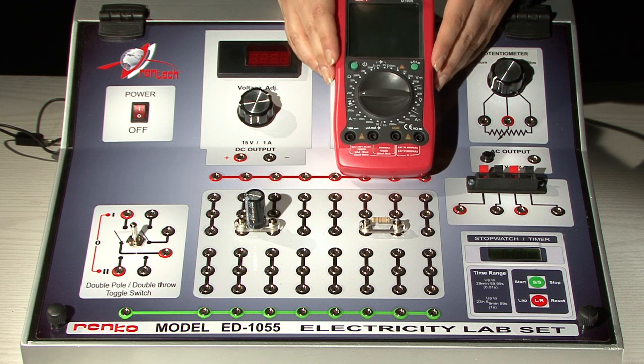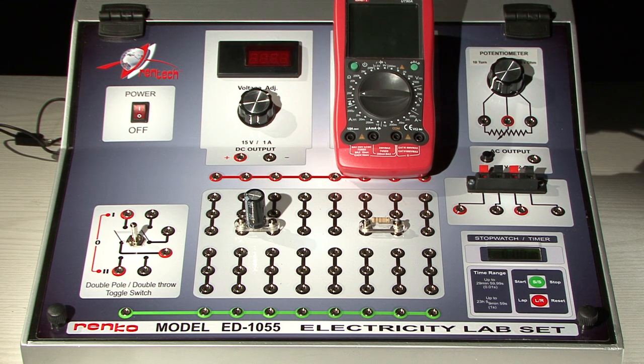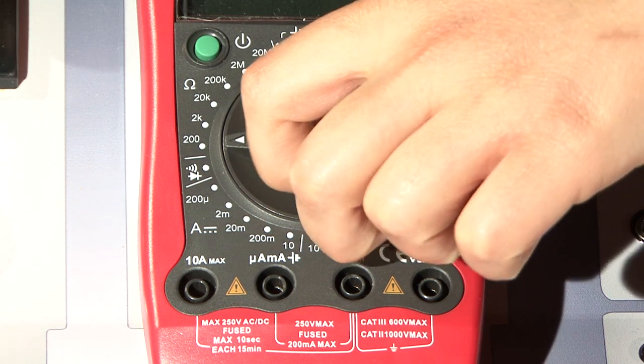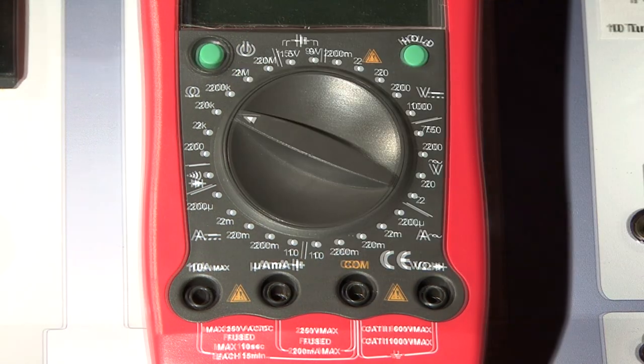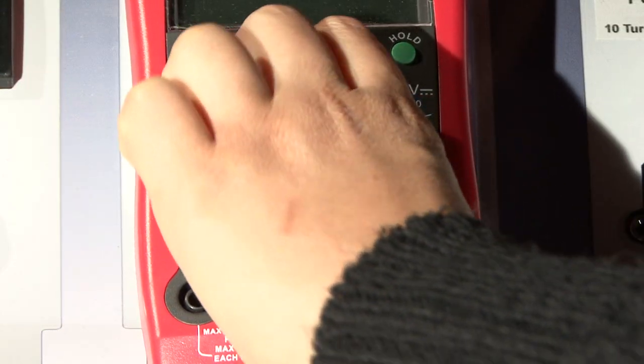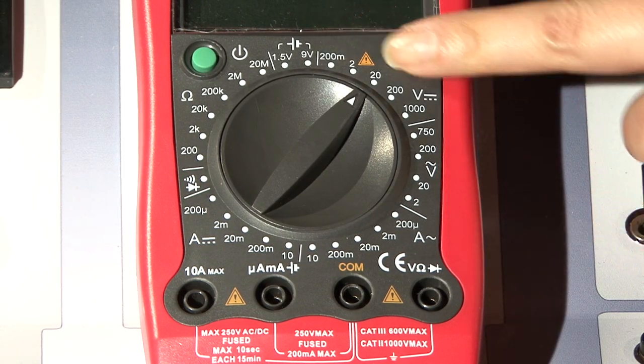This is a multimeter. We can measure resistance, current, and potential difference with this instrument. We need to use this part for measuring resistance, and this part for measuring potential difference in DC circuits.